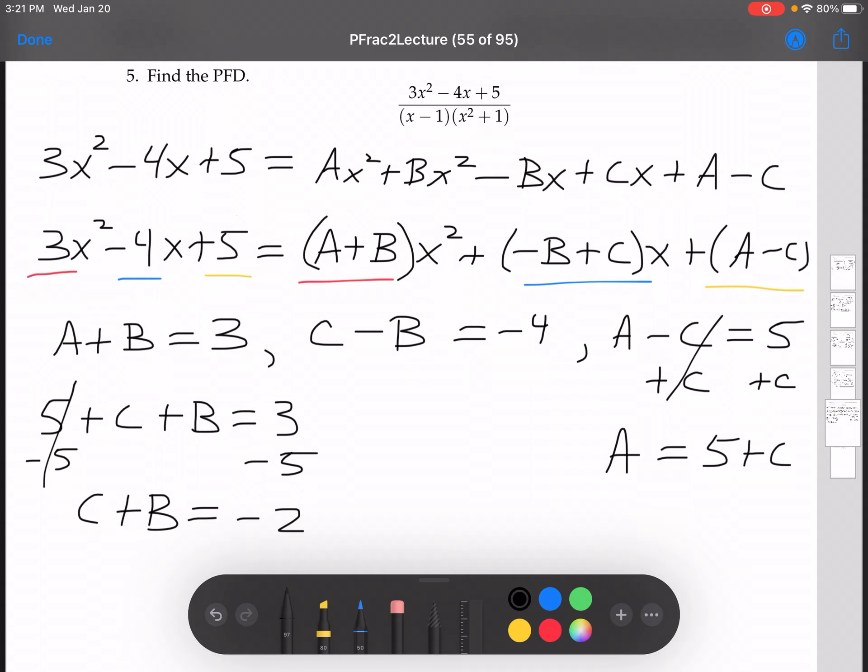And so now notice that I have c minus b equals negative 4 there, and I have c plus b equals negative 2. If I add these two equations here, I'll get 2c, the b's will cancel, equals negative 6, and c equals negative 3.